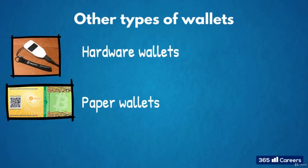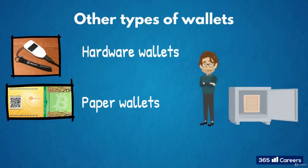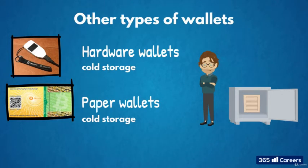Hardware wallets are specialized hardware devices designed to securely store private keys. In their appearance, they are similar to USB sticks. Paper wallets, on the other hand, are a surprisingly low-tech but highly effective solution against potential hacking attacks, and they simply store cryptographic keys on paper. Such paper wallets must be securely physically stored to mitigate the risk of theft or loss.